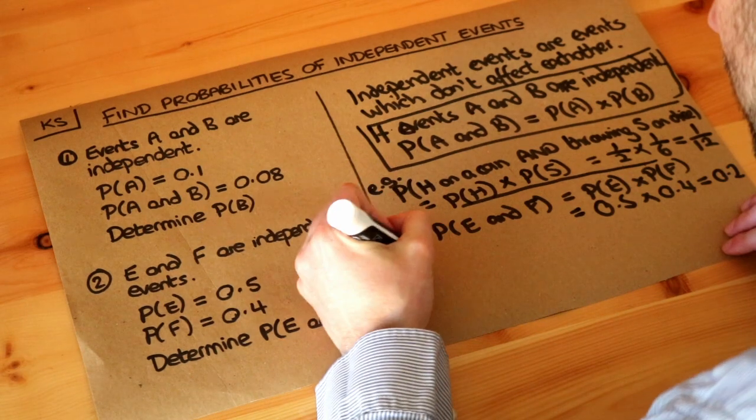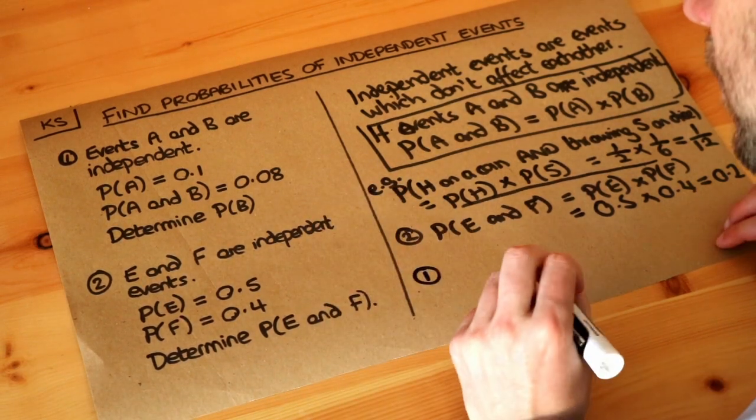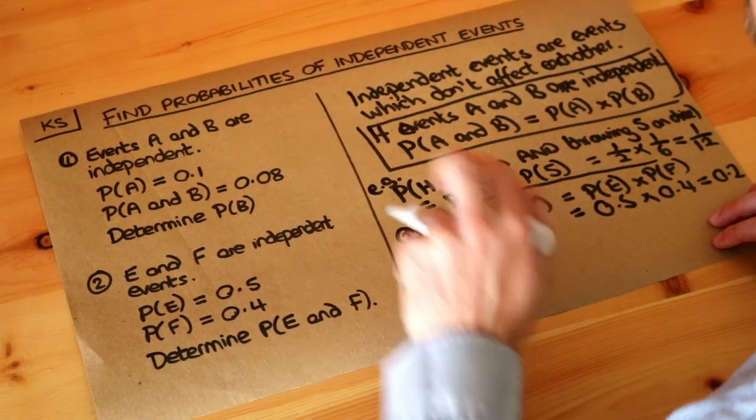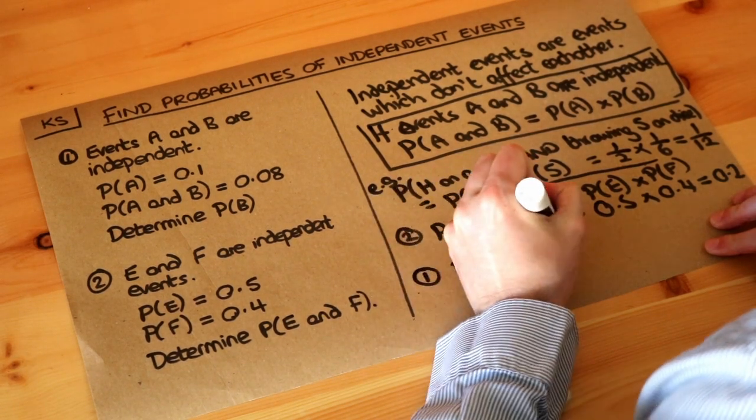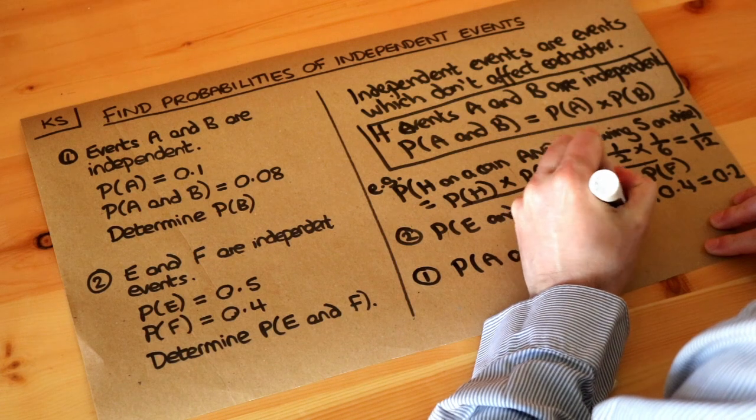What about question one? This is going to require some rearrangement. Again, A and B are independent events, so the probability of A and B, if we write out the formula, is the probability of A times the probability of B.